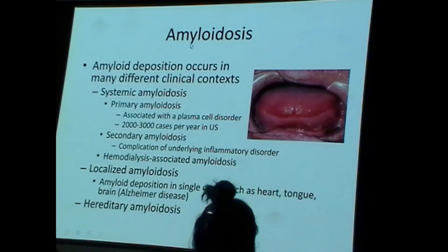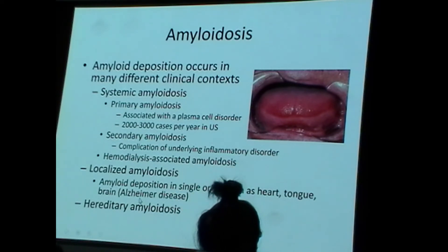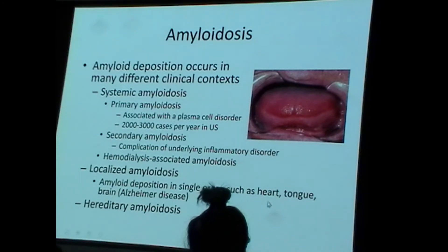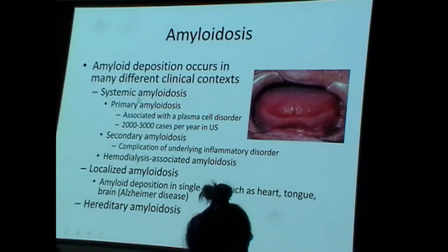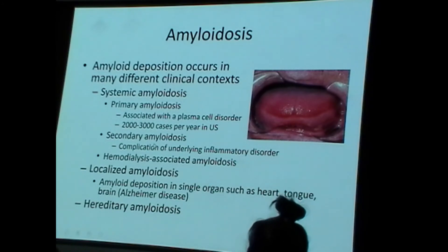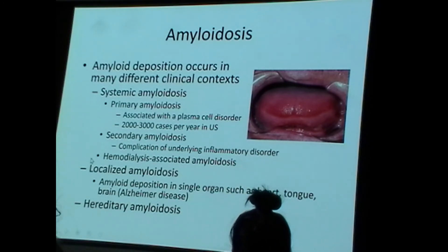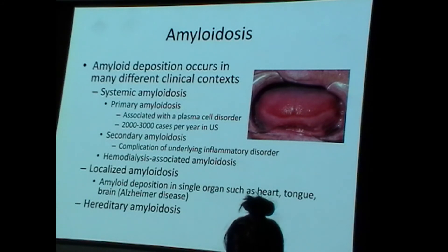Amyloidosis is its own category of disease. Amyloid deposition can occur systemically, in a localized setting, or in a familial or hereditary setting. Systemic amyloidosis frequently occurs in the setting of multiple myeloma or other plasma cell disorders — called primary amyloidosis. Amyloidosis can also occur secondary to a chronic systemic inflammatory disease — called secondary amyloidosis. It can also occur in the setting of chronic hemodialysis, though this is increasingly less common due to improved dialysis filters.